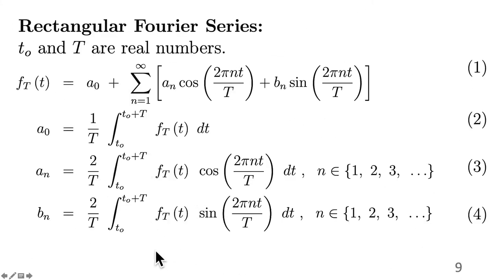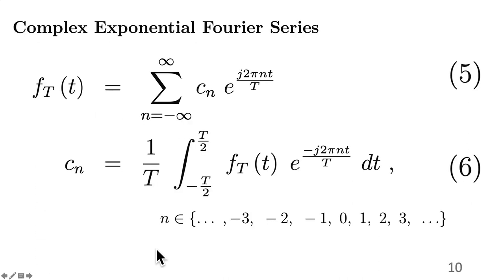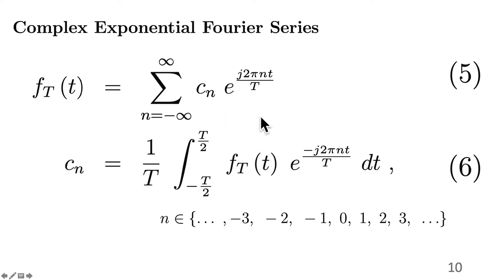Previously we looked at the rectangular Fourier series, and now the complex exponential Fourier series. This is the synthesis from the frequency domain coefficients to the time domain waveform, and this is the decomposition from the time domain waveform to the frequency domain coefficients. The integral here is from minus T over 2 to T over 2. With the rectangular, it was from t0 to t0 plus capital T, meaning any period. Now it's very clearly shown as this particular range, but it could also be 0 to T, or t0 to t0 plus capital T. And n is defined for integers from minus infinity to infinity.